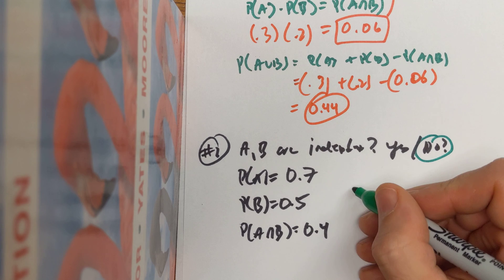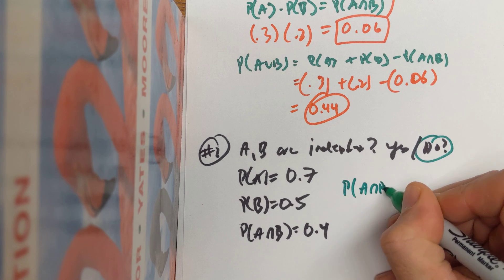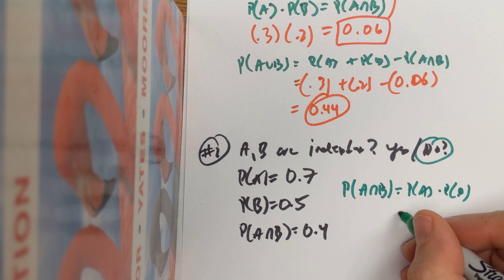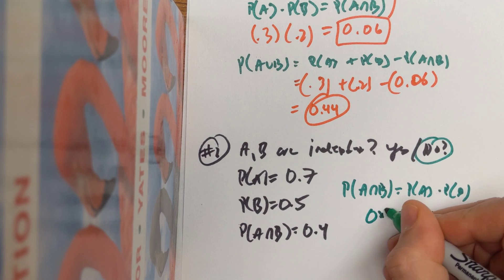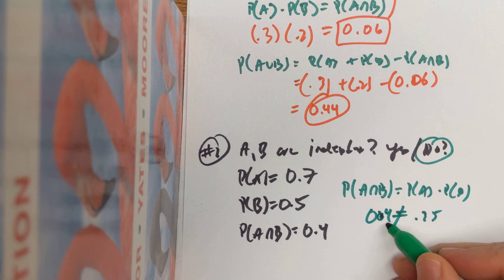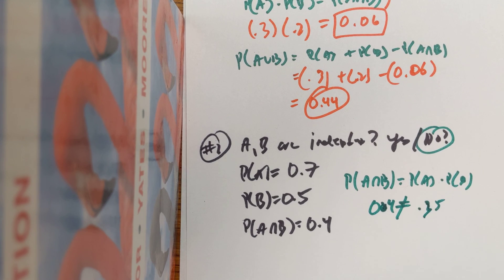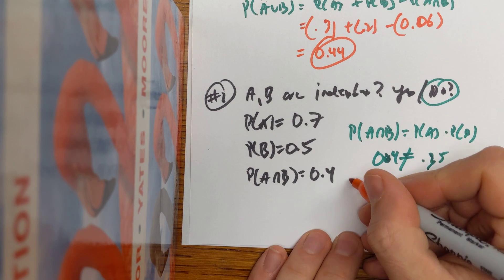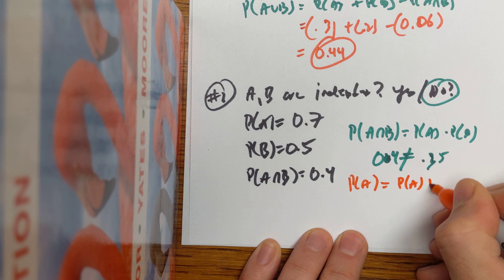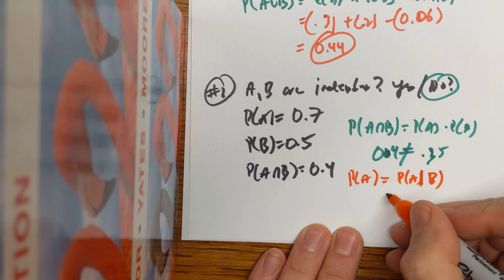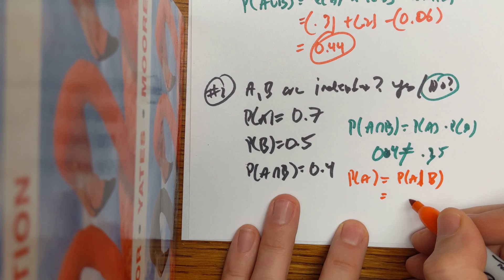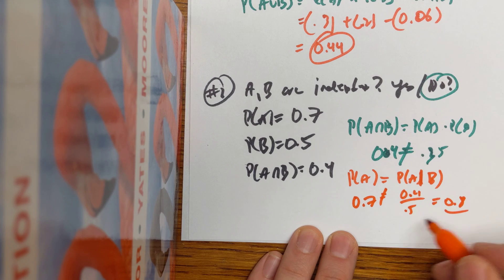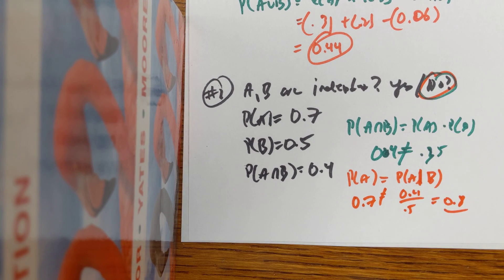You should very quickly realize the answer is absolutely no. If they were independent, then the probability of A intersect B should equal the probability of A times the probability of B. I can see very quickly that 0.7 times 0.5 equals 0.35, and that's not equal to 0.4. Another way we could check is by seeing if the probability of A equals the probability of A given B. That would be 0.4 divided by 0.5, which is 0.8 — and 0.8 is not equal to 0.7. So it's two proofs that these two events can't be independent.